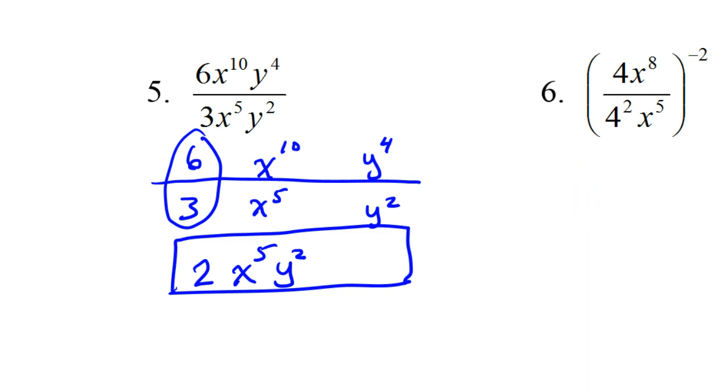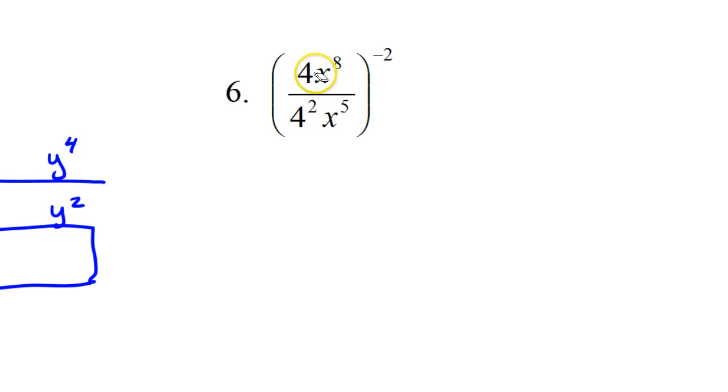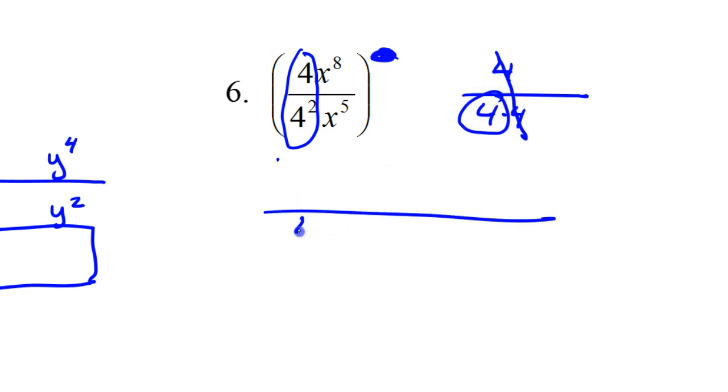Number six is going to have a couple of steps to it. I would still simplify everything inside the parentheses first. So for a minute, just ignore the negative two out there. We'll deal with that later. So inside here, what do I have going on? Well, looking at the 4 over 4 squared, some students will go ahead and write 4 over 16. That's fine, but if you really understand what you're doing, that's not necessary. So I'm going to have 1, 4 in the bottom.